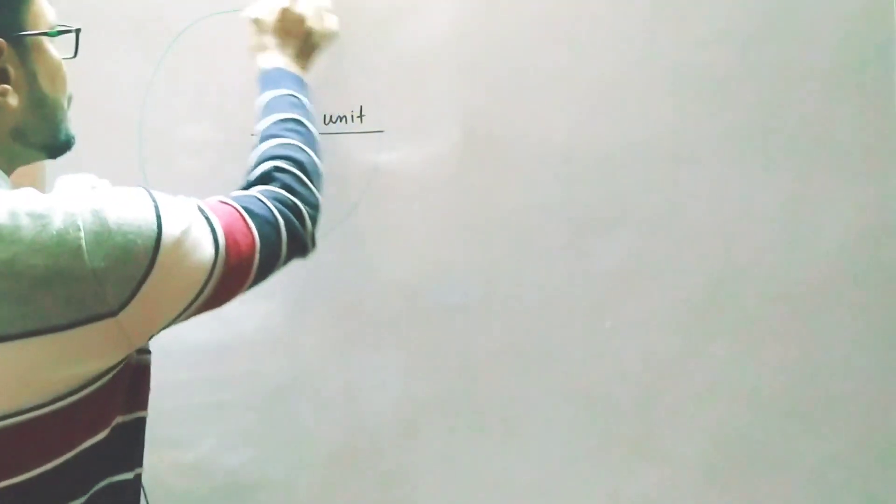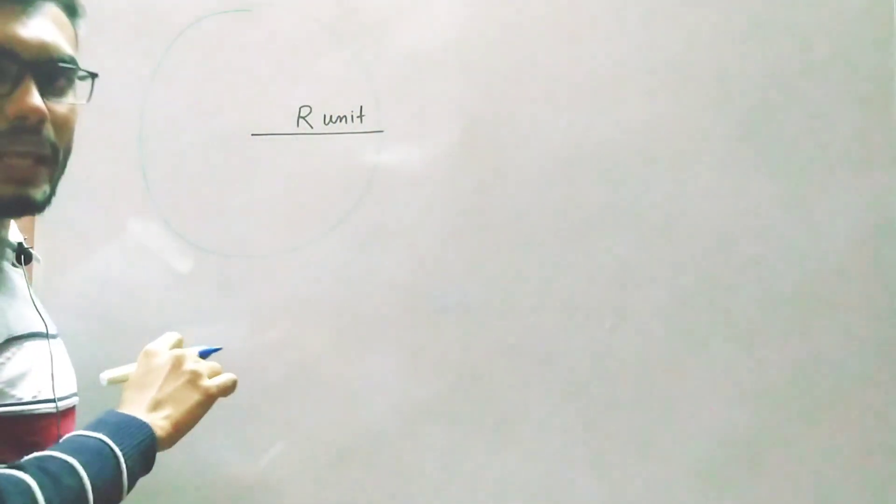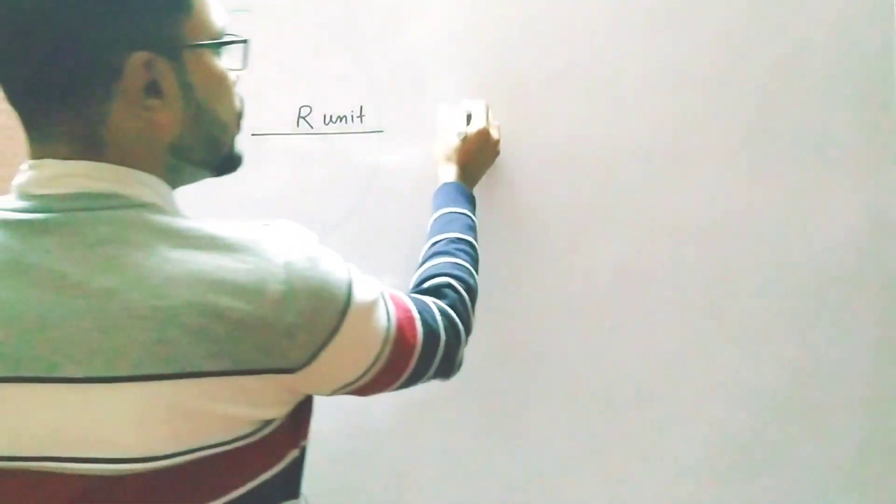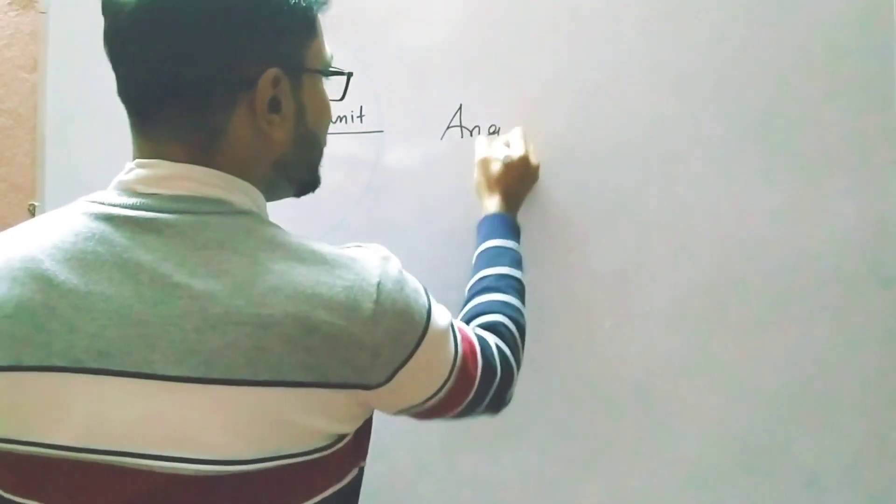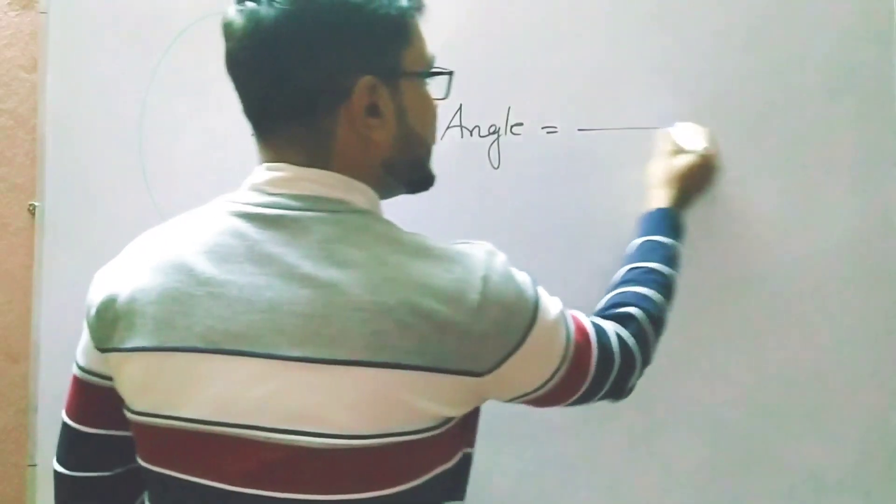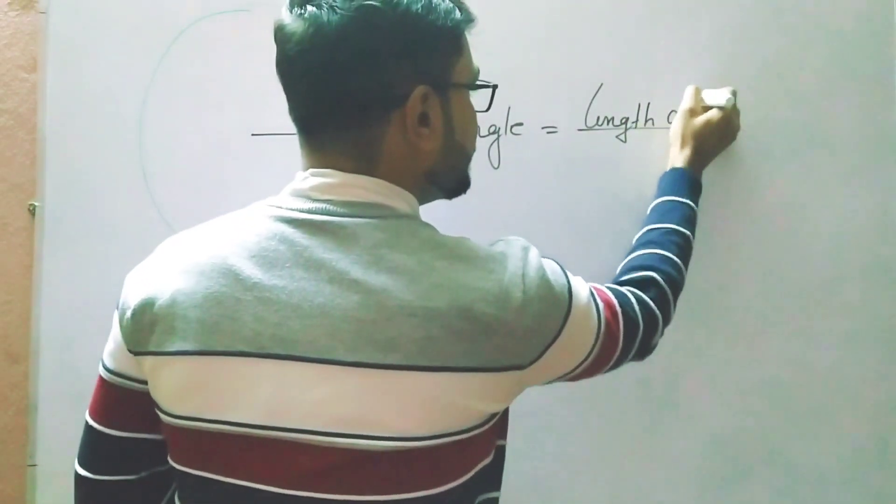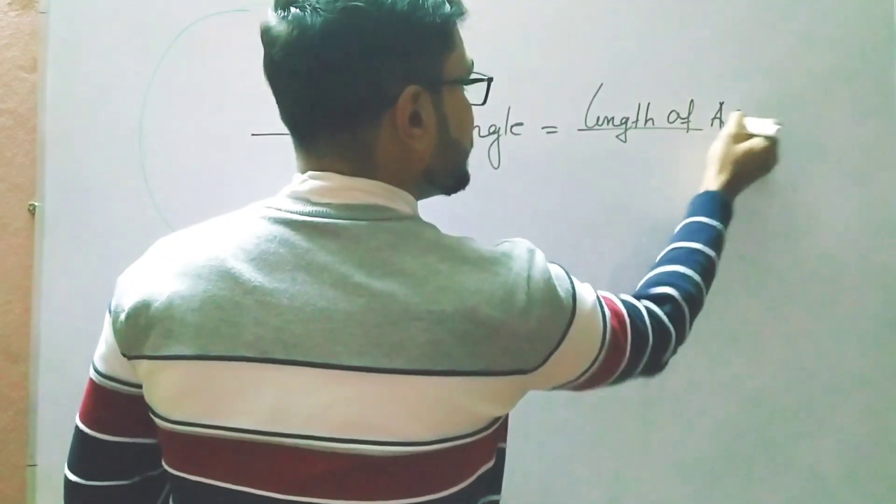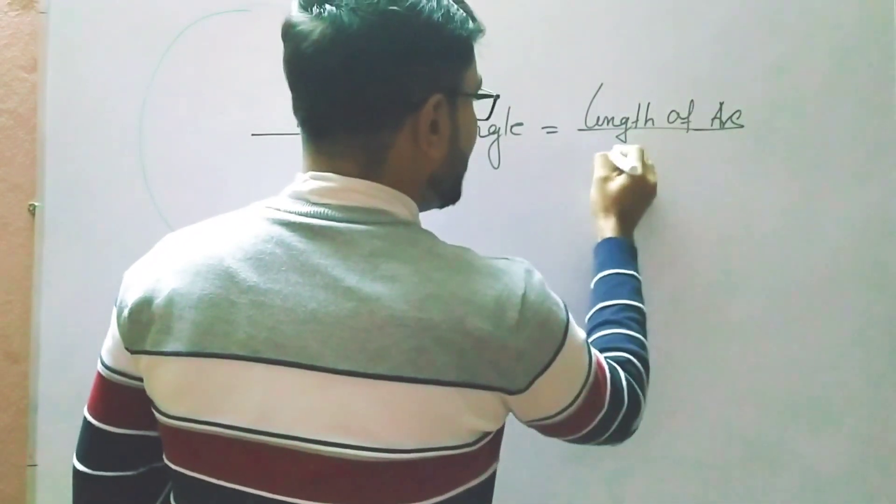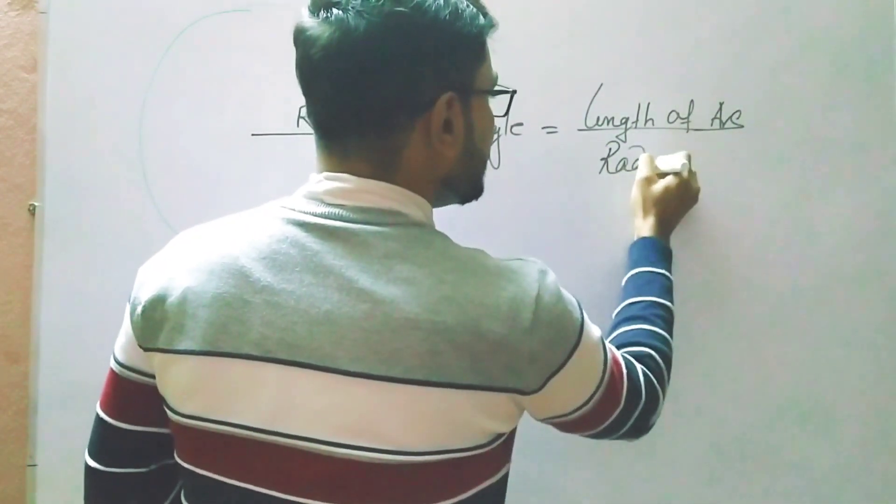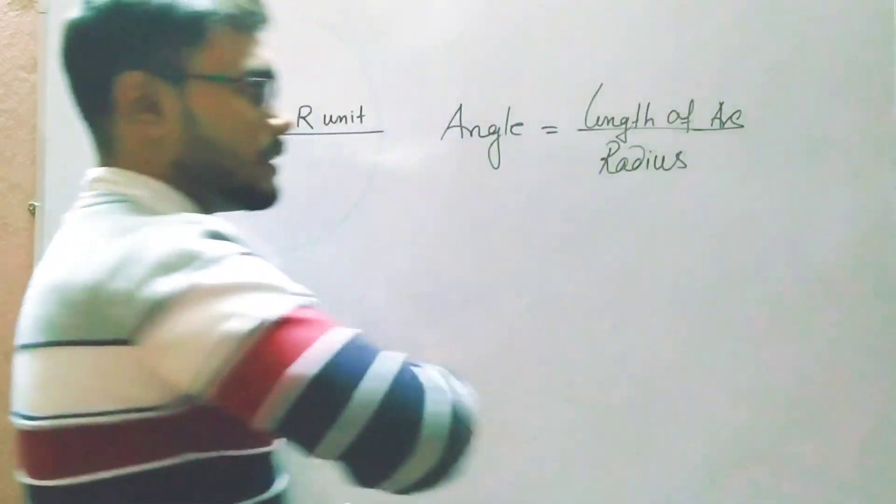Now we have to find out the measure of the total angle. We know the formula for angle is length of the arc divided by radius of the circle.